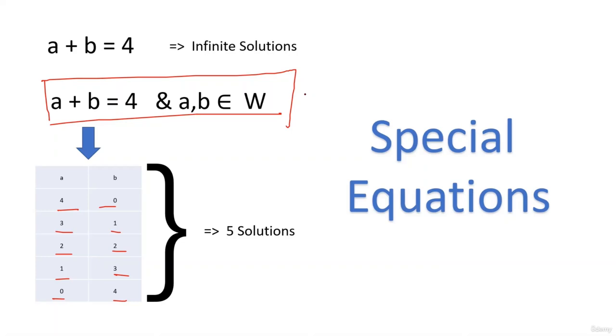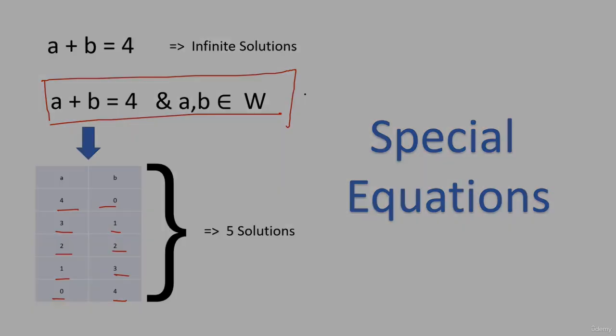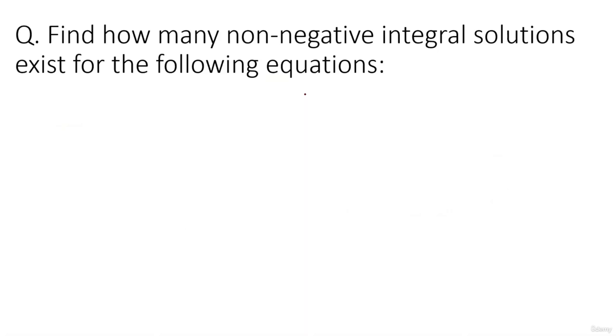Find out how many non-negative integral solutions, meaning whole number solutions, exist for the following equations. x plus y equals 10. From the logic of the previous question, we can start by taking x as 10, y is 0, x is 9, y is 1. This will go on up till x is 0 and y is 10. So we have exactly 11 solutions. That's the answer for this question.